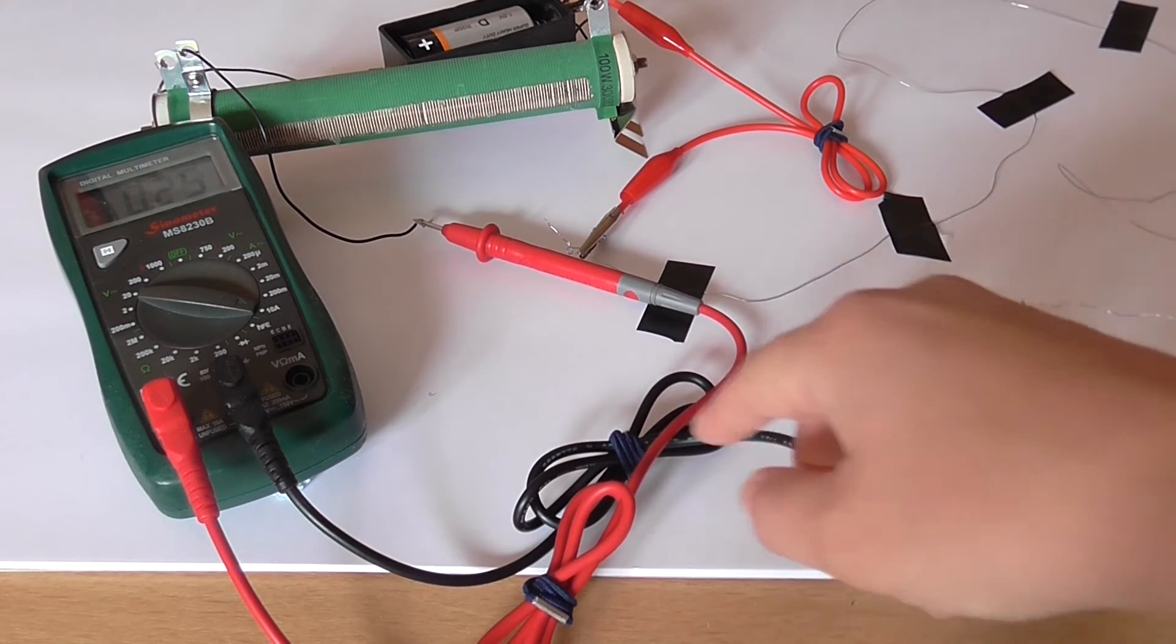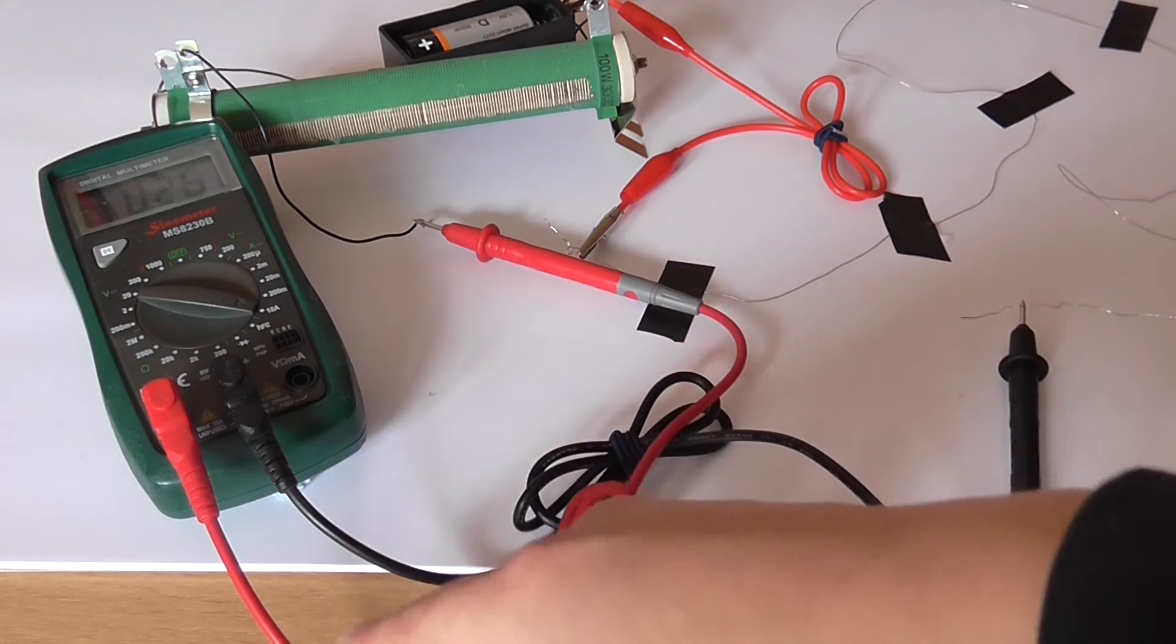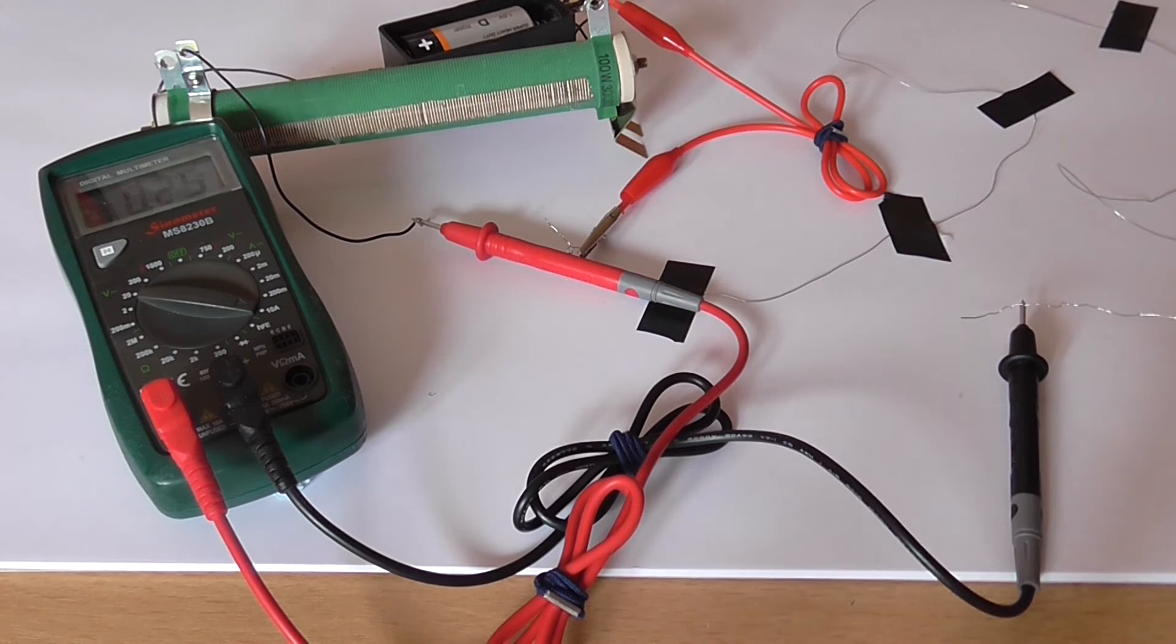The multimeter is in series with the resistance wire at the moment as an ammeter. The ammeter reading is 0.25A, which is why it's in the 2A range and in the infused port.